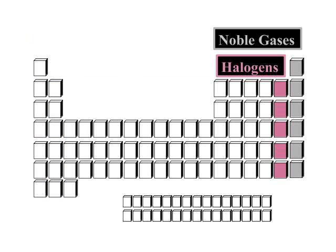Your halogens are your most reactive nonmetals — fluorine, chlorine, bromine, iodine, and astatine. And then your noble gases are the least reactive elements of all — helium, neon, argon, and so on. You are responsible for knowing the alkali metals, alkaline earth metals, halogens, and noble gases.